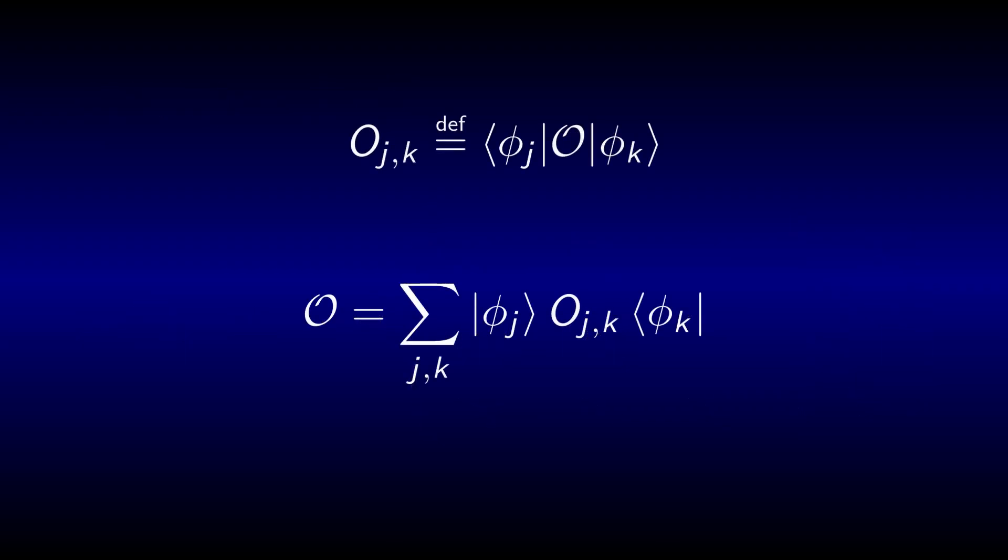This simplification is so common and useful that many people start identifying the operator with its matrix representation. This is something you should be careful with, though. The operator is an object that acts on wave functions in a particular manner, while the matrix is just a bunch of numbers which change if you pick another basis for your system. To distinguish between the two I usually use calligraphic symbols for operators and plain italic symbols for their matrix representations.